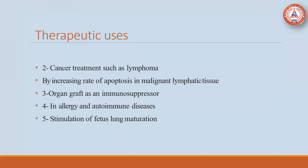Another use of glucocorticoid is in the treatment of cancer such as lymphoma. As previously stated, it decreases the number and activity of T lymphocytes — the lymphatic cells. When there is lymphoma cancer, glucocorticoids are used by increasing the rate of apoptosis for the treatment of lymphoma. They are also used for organ grafting as an immunosuppressant, for anti-allergic and autoimmune diseases, and for fetal lung maturation when the fetal lungs are not well developed.